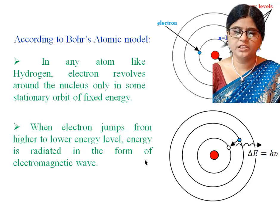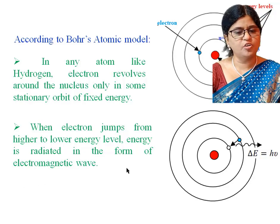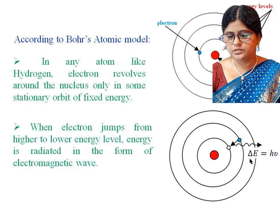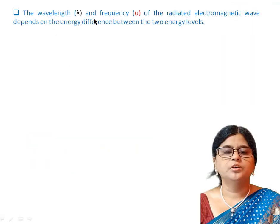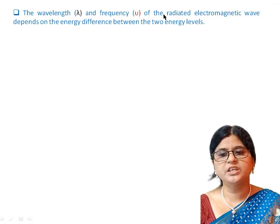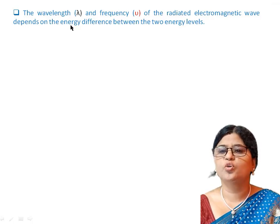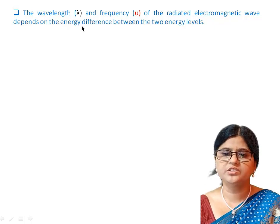When the electron jumps from a higher to a lower energy level, energy is radiated in the form of an electromagnetic wave. The change in energy is denoted as delta E. The wavelength and frequency of the radiated electromagnetic wave depend on the energy difference between the two energy levels.